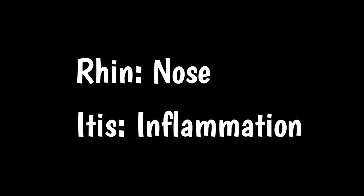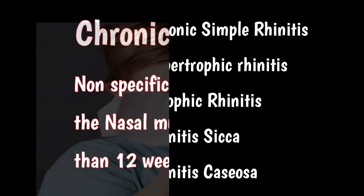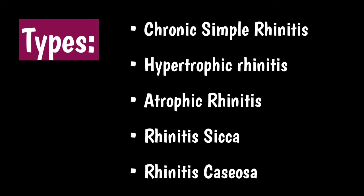Rhino means nose and itis is for inflammation, so chronic rhinitis is basically non-specific inflammation of the nasal mucosa for more than 12 weeks or 3 months. There are 5 types of chronic rhinitis: chronic simple rhinitis, which will be discussed in this video, hypertrophic rhinitis, atrophic rhinitis, rhinitis sicca, and rhinitis caseosa — all these types will be discussed in upcoming videos.